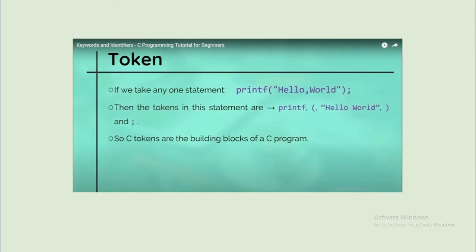If you take any one statement in C Programming, like I'm taking printf hello world statement, that can be converted into tokens. Printf is one token, open parenthesis is another token, in double quotes hello world is another token, closing parenthesis is another token, and semicolon is also another token. These are the collection of tokens in one statement. C tokens are the building blocks of a C Program.